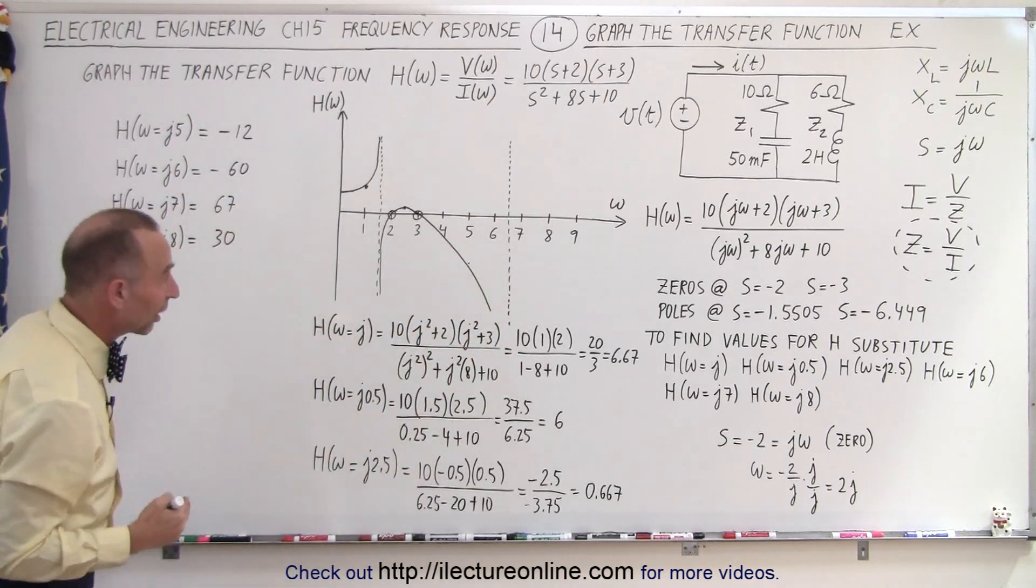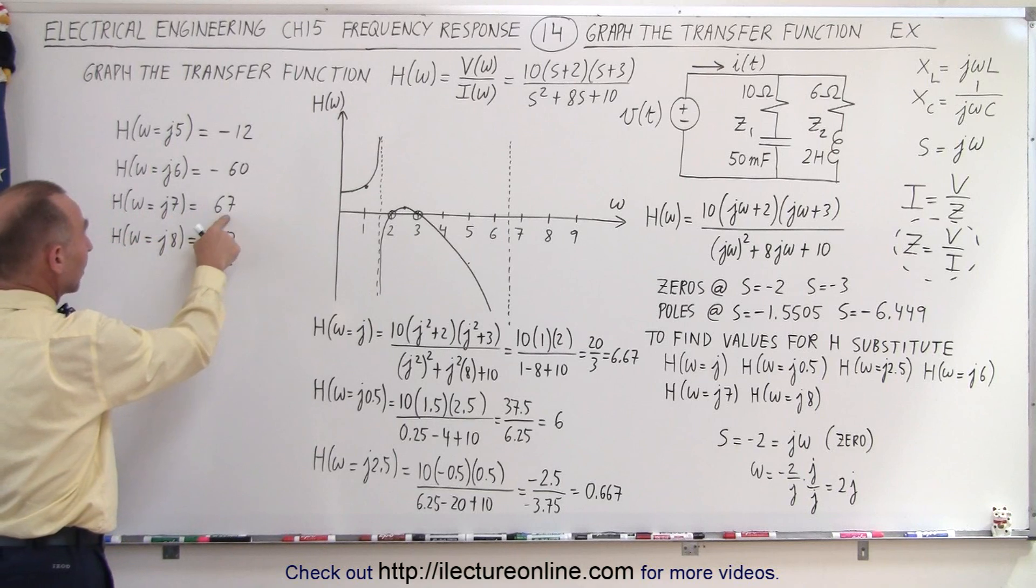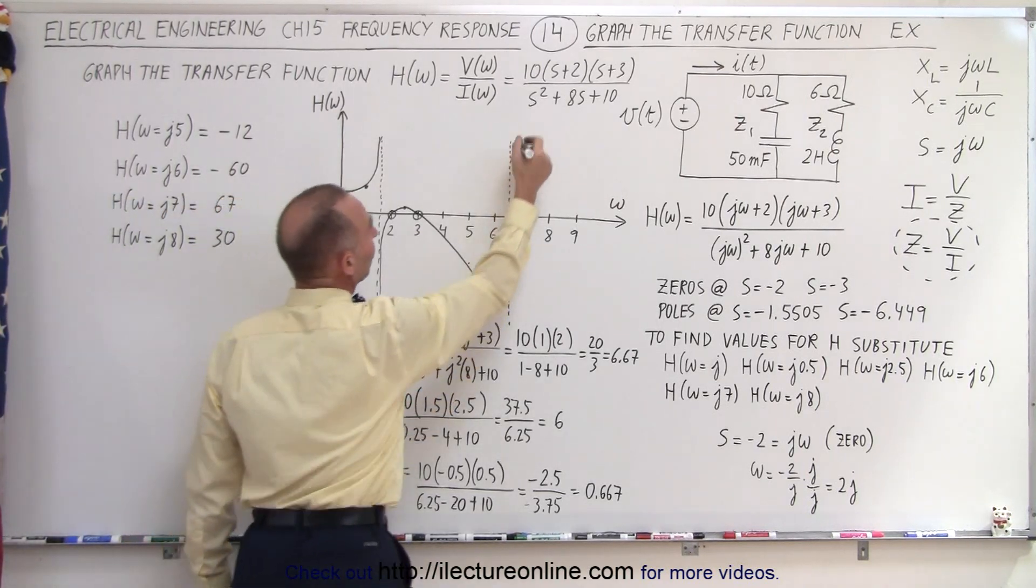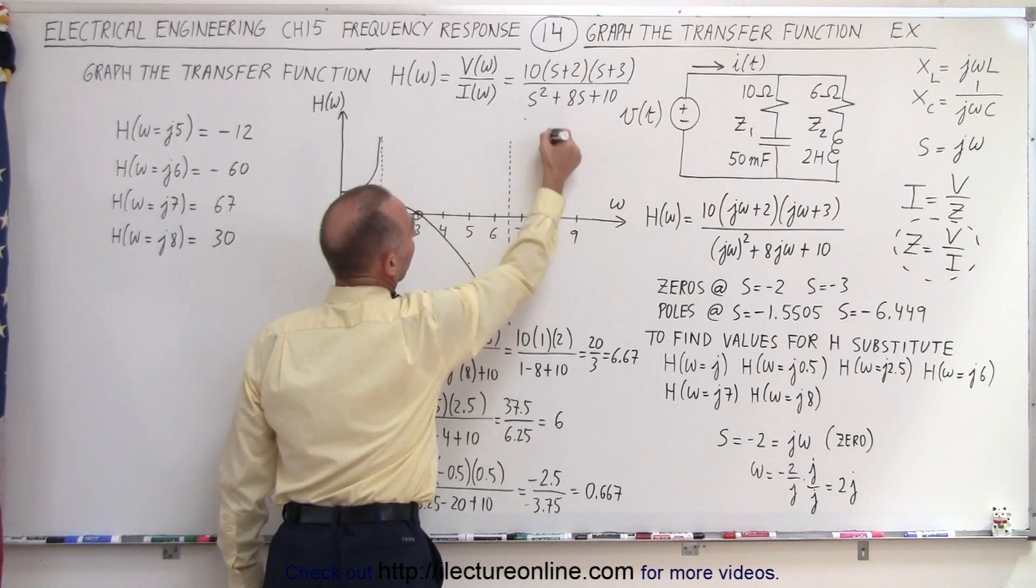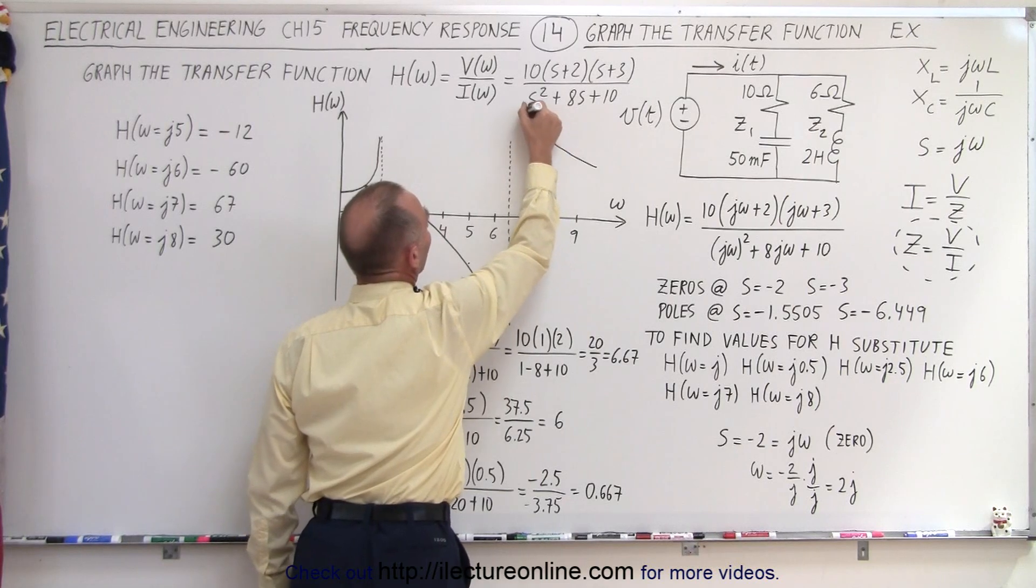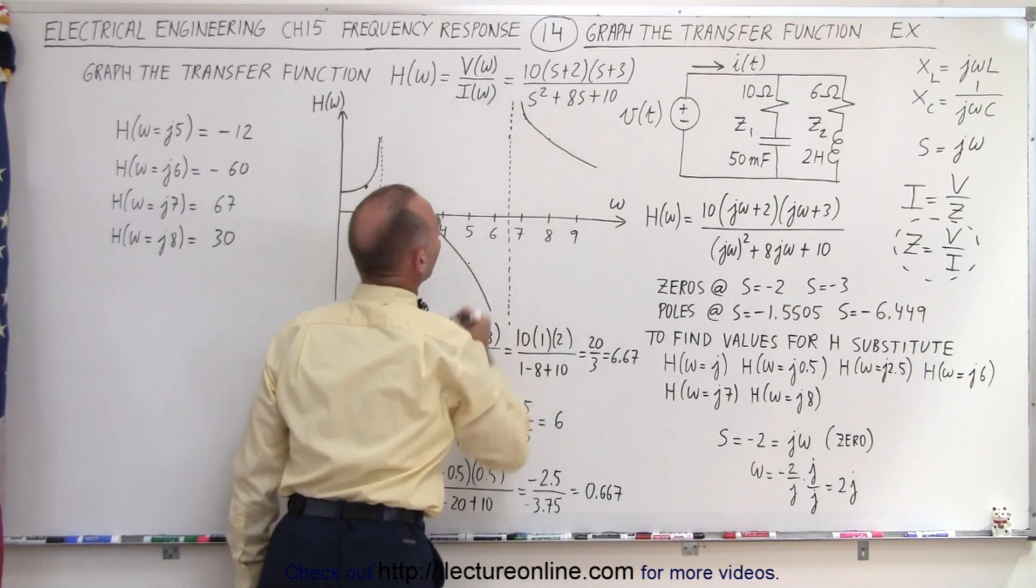What about on the other side of the pole? Well, for j7 we get a positive 67, for j8 we get a positive 30. So at 7 we get a very big positive value, 8 will go like this, and so we can see that the curve goes this way, asymptotically reaches the pole this way.